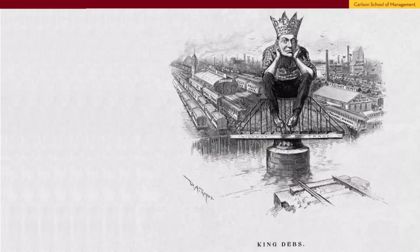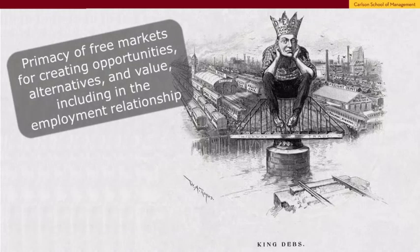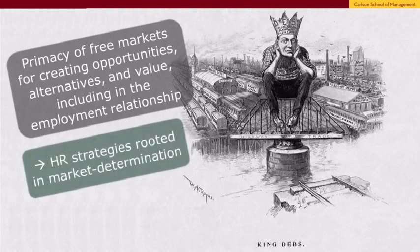The first one portrays labor leader Eugene Debs as a king during the Pullman strike in 1894. I use this drawing to highlight the importance of markets — the strike here is choking off commerce, choking off the highway of trade. This is seen as very harmful because there's a belief in this school of thought in the primacy of free markets for creating opportunities, alternatives, and values, including in the employment relationship. Some might call this a neoliberal market ideology. People who hold this view are likely to favor HR and managerial strategies rooted in the determination of wages and other things by whatever the market will bear.